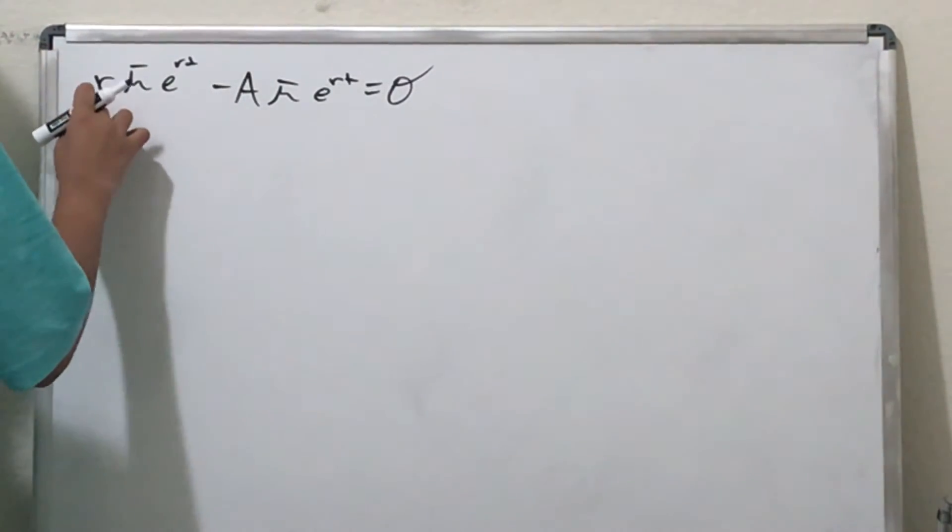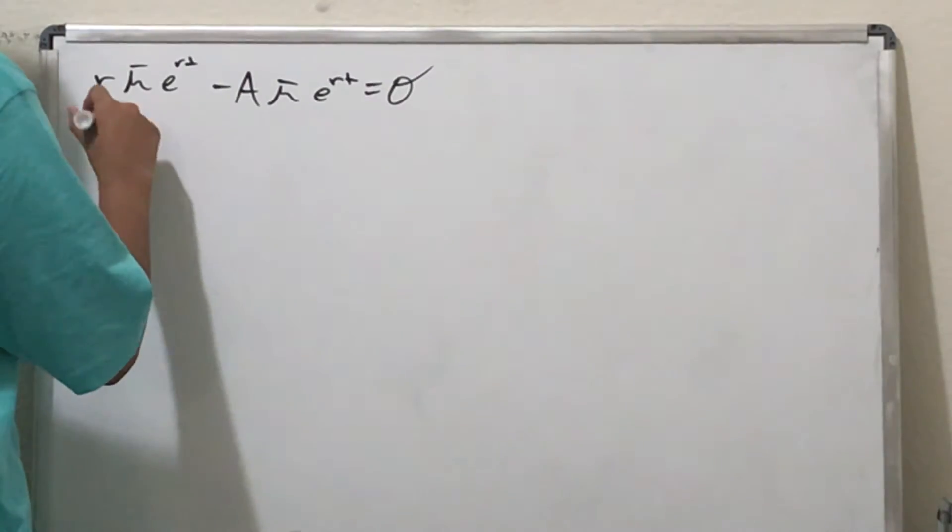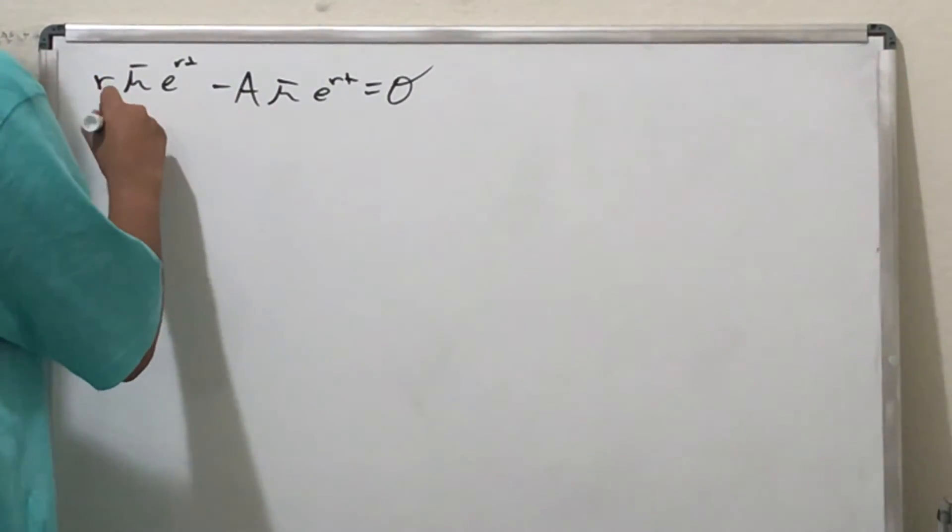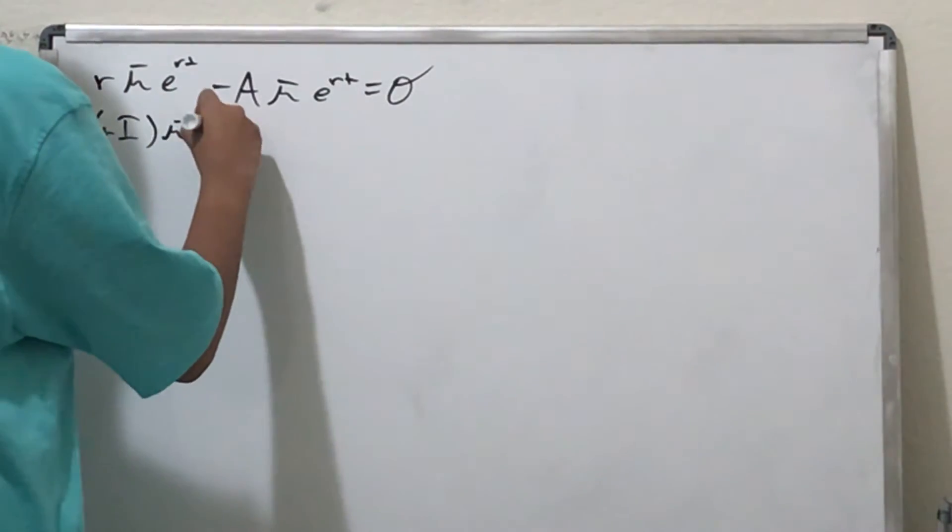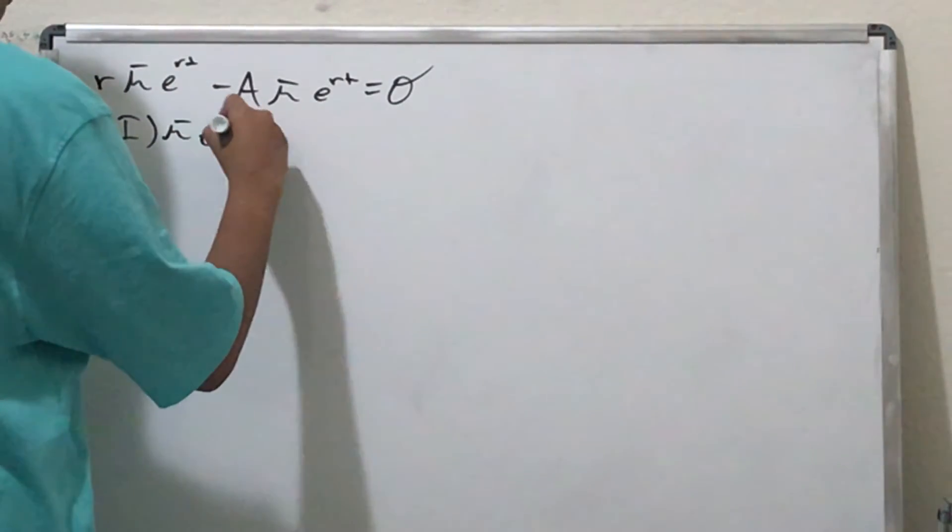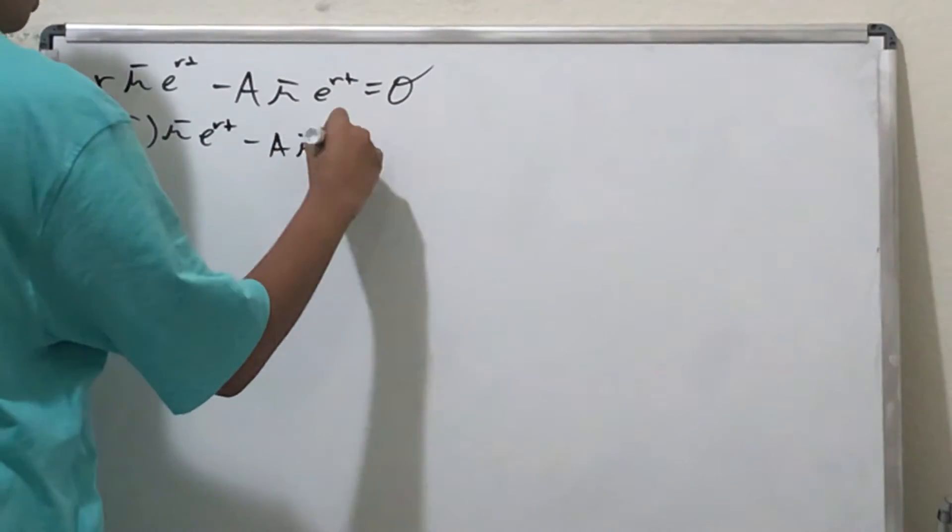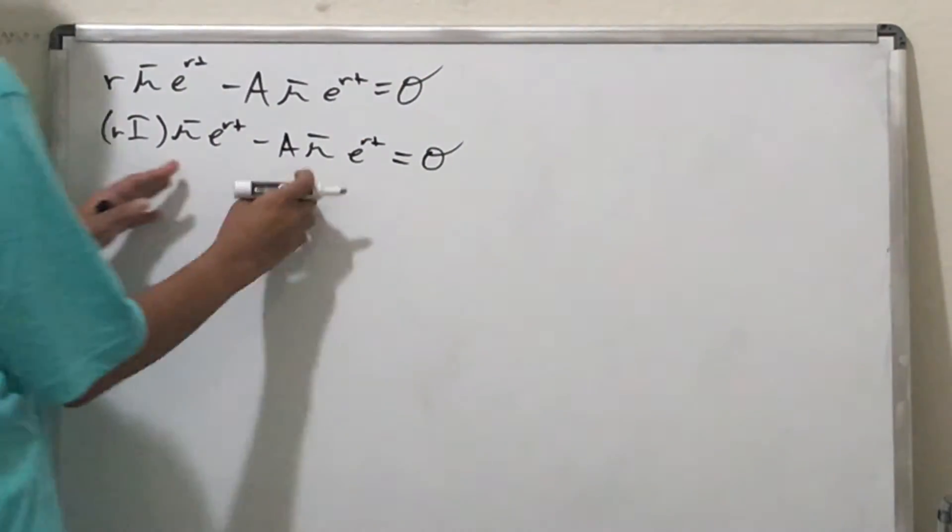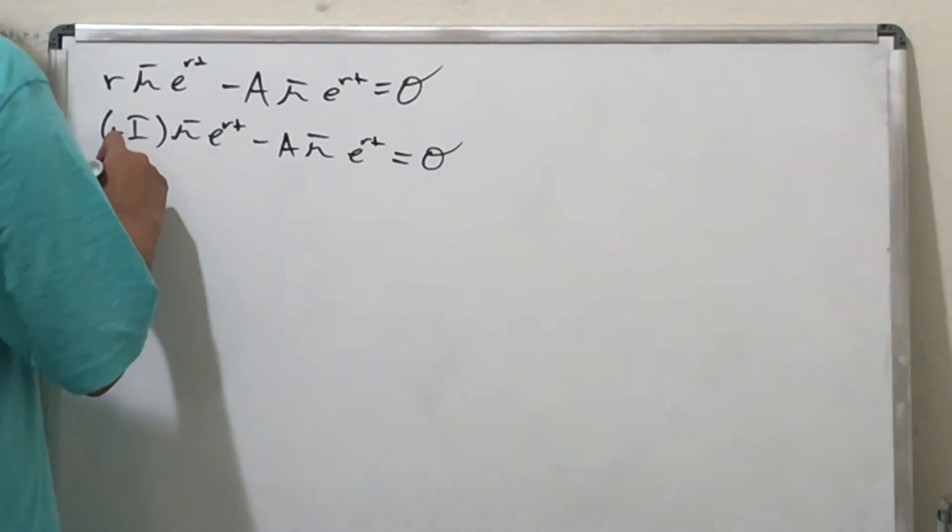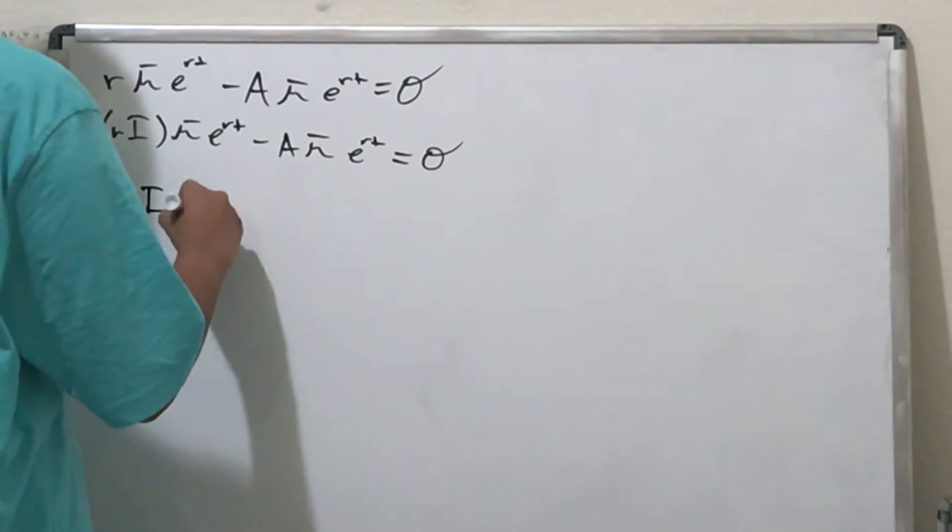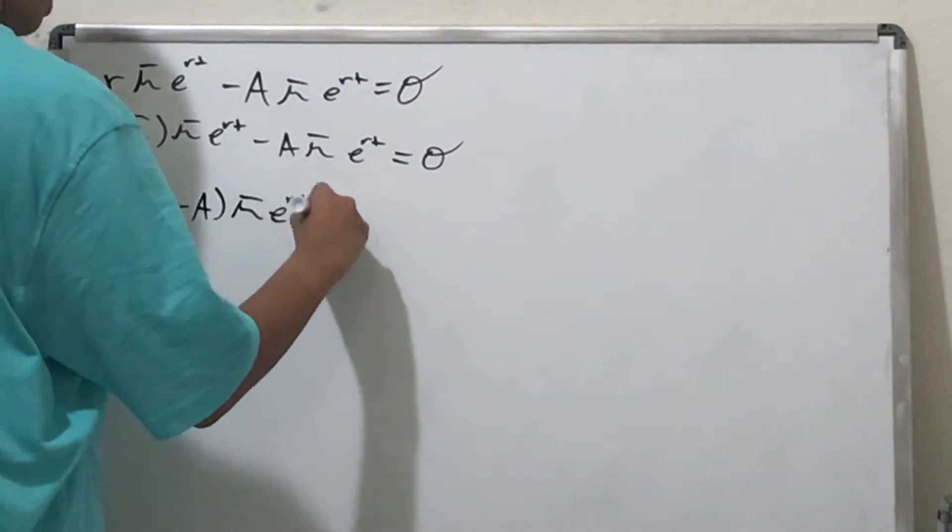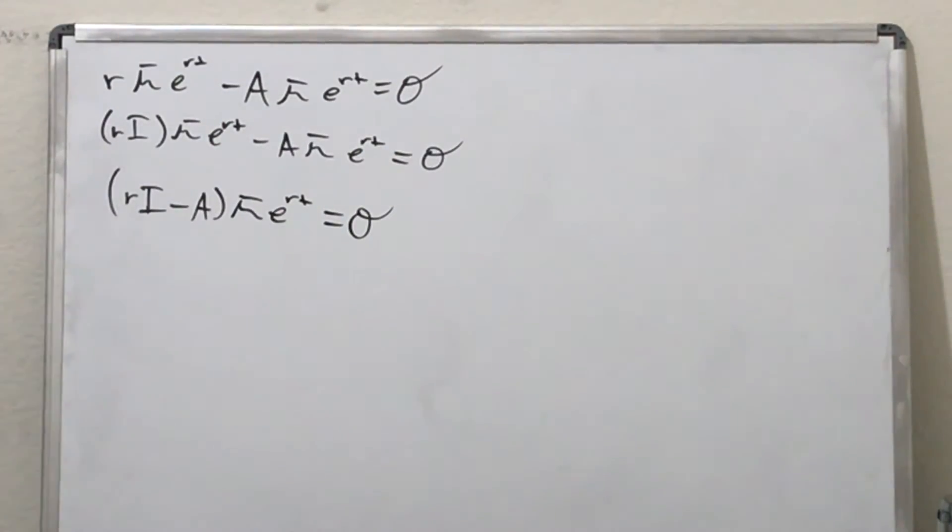Notice, this r is the same as rI. The reason why I did that is so we can factor this μe^(rt) out on both sides. So we get (rI - A) times μe^(rt) equals the zero vector.